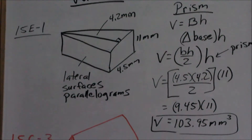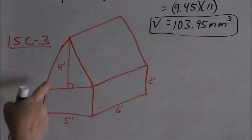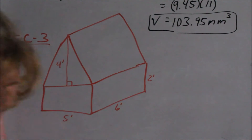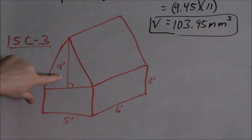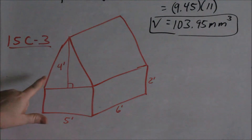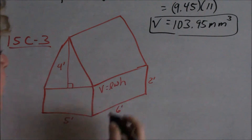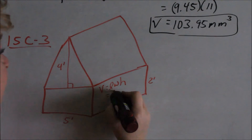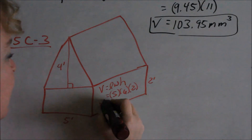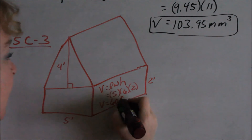Now look at 15C3. This figure looks like a house, so you break it into two figures: a box on the bottom and a prism on top. Finding the volume of the box first: length times width times height is 5 times 6 times 2. 5 times 6 is 30, times 2 is 60. The volume of the box is 60 cubic feet.